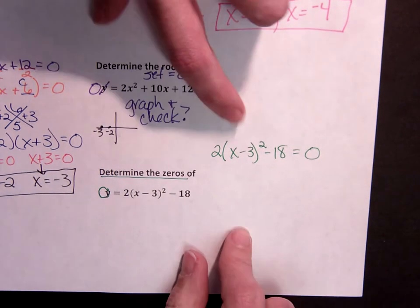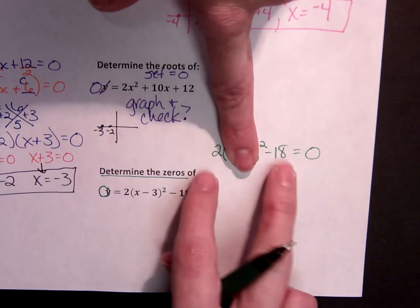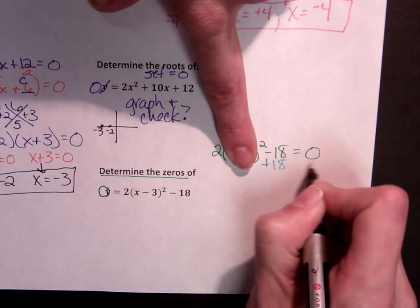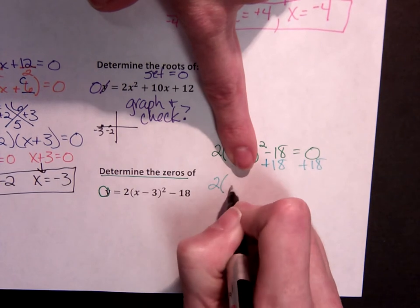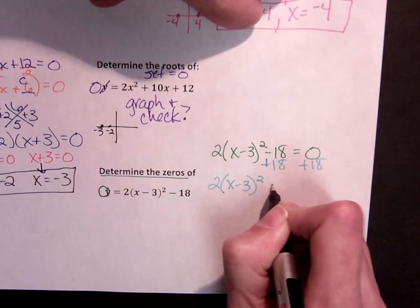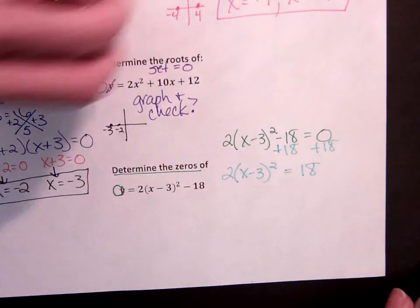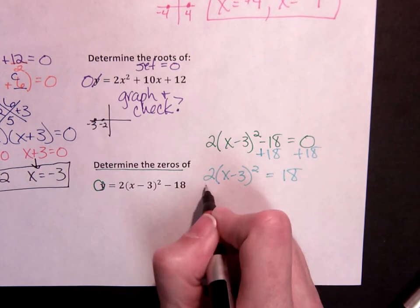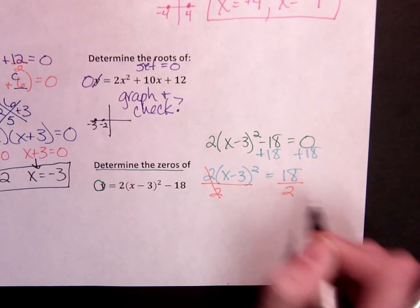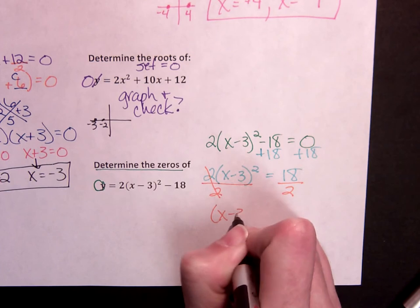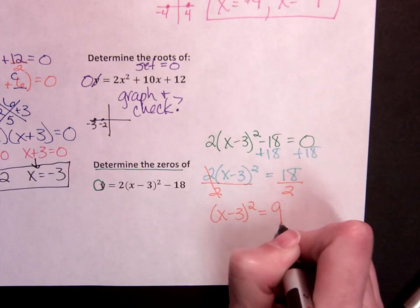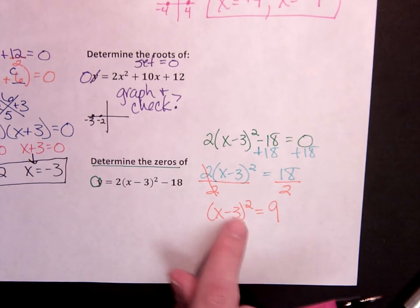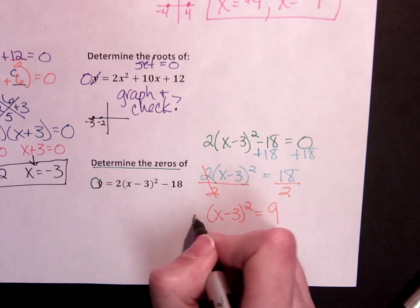So 2 times x minus 3 squared minus 18 equals 0. I'm trying to isolate the squared term, so I need to get rid of everything else. So I'm going to add 18. 2 times x minus 3 squared equals 18. Isolating the squared term, so I need to get rid of the multiplication. x minus 3 squared equals 9. All that's over here is a squared term. Something squared. That's it.